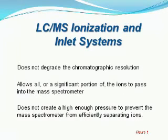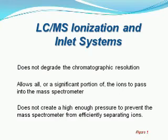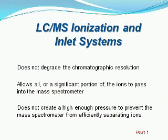The third requirement is that the ionization and inlet systems do not create a high enough pressure to prevent the mass spectrometer from efficiently separating ions. In simpler terms, we simply cannot allow all of that vapor produced by the HPLC mobile phase to pass into the mass spectrometer, because we would no longer have a vacuum in the mass spec, and therefore we'd no longer have a mass spec — we'd no longer be able to do mass analysis on the injected ions.